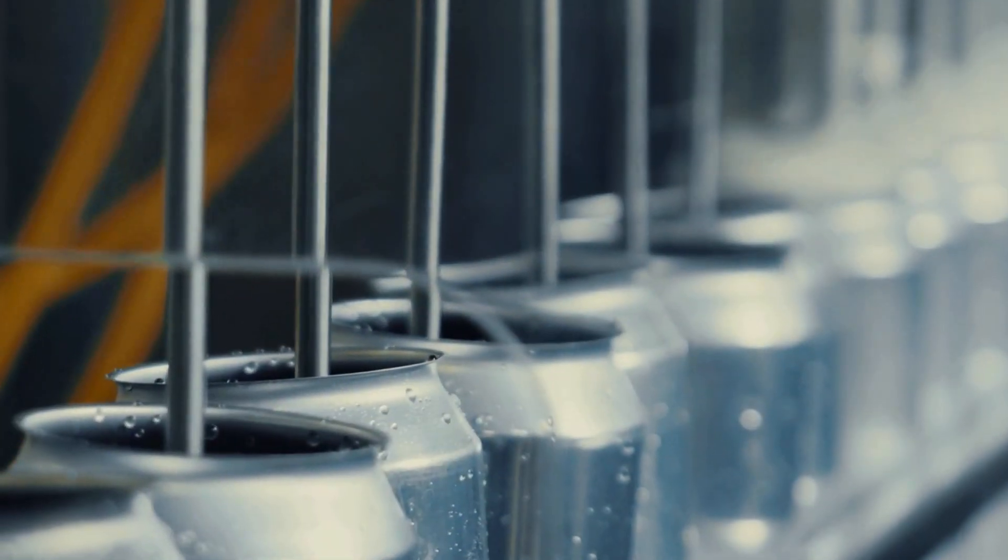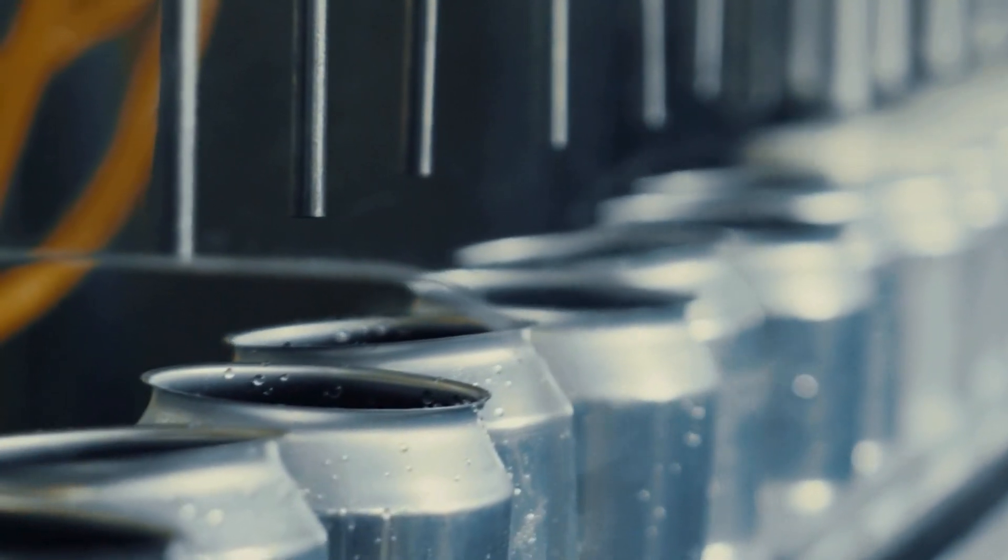This can be used on a bottling line to determine what soda you're actually bottling. It also can be used in their base product where they're actually making the syrup for it to blend together. And then also when they're blending the syrup with the carbonated water to ensure that it's staying at the correct consistency so it tastes the same from bottle to bottle.